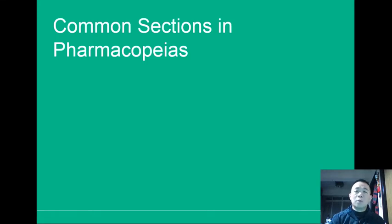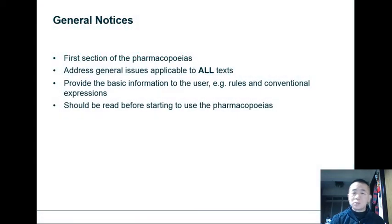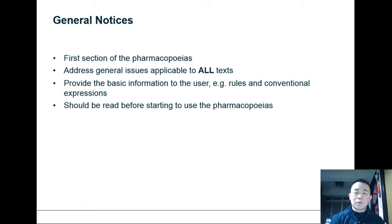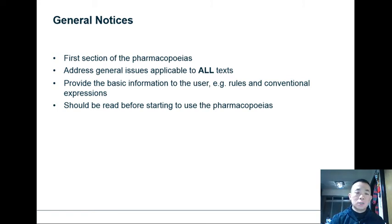Now let's talk about some common sections that you often see in pharmacopoeias. The first section is general notices, which is always the first section of a pharmacopoeia. The reason for this is that it contains all the general issues applicable to all of the texts throughout the pharmacopoeia. It provides basic information to the user such as rules and conventional expressions, so as you read along you'll understand what certain terms and abbreviations mean. It's very important that before you start reading any pharmacopoeia, you should always start with the general notices.